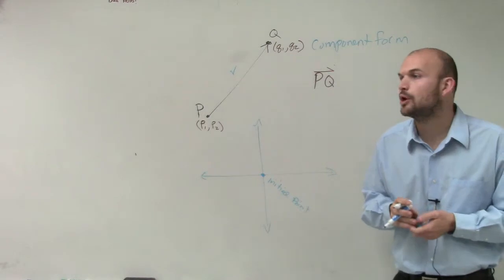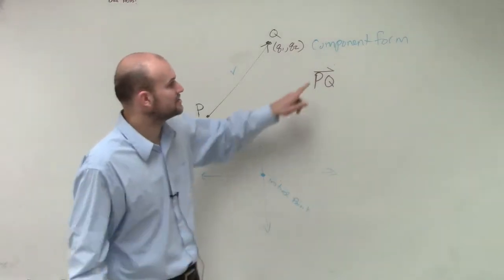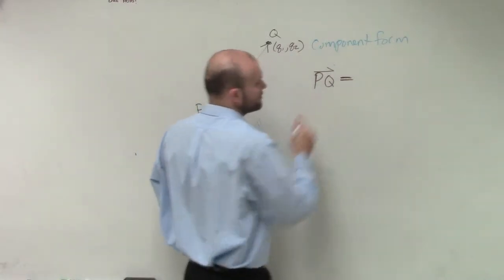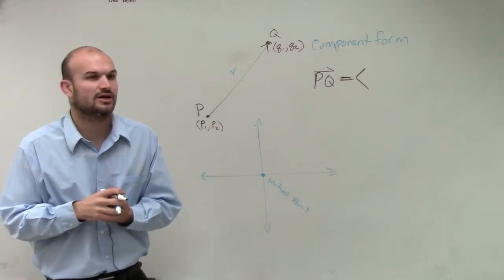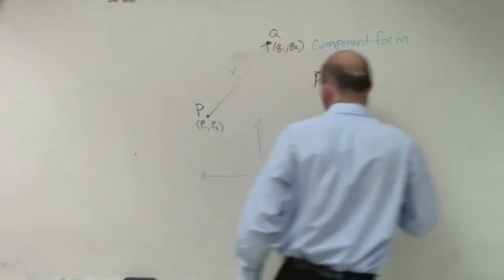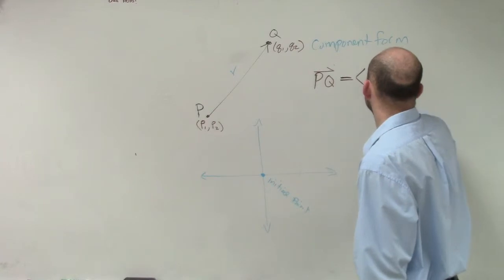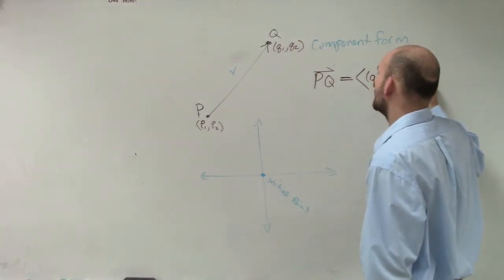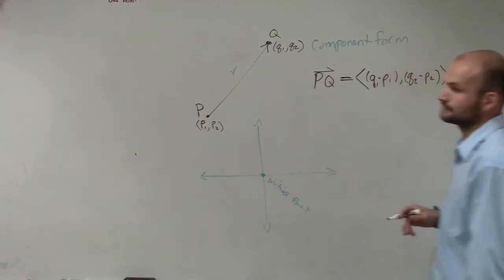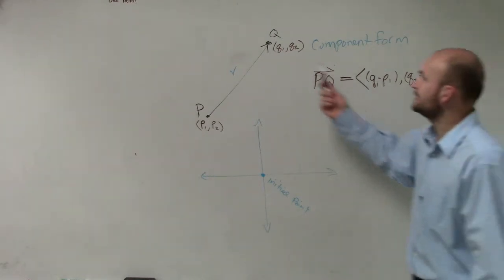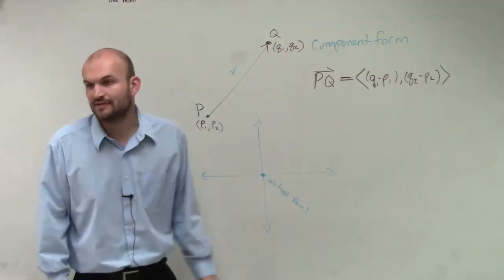All right, so if I want to find the component form, it's going to be very, very similar to just finding pretty much the change in these two values. So what we're going to do when I want to write the component form, I'm going to have not parentheses, but we're going to use these little arrow points. So what that's going to be is Q1 minus P1 comma Q2 minus P2. So all we're simply doing is we're pretty much finding the change in our x values, and we're then finding the change in our y values to create a coordinate point.